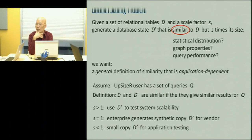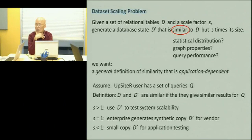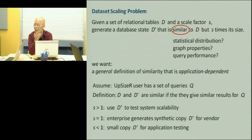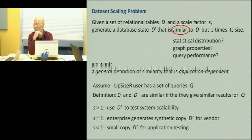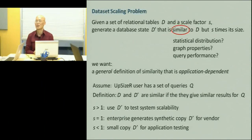After we did this and went around talking to people, we discovered that there's a lot of interest in the other two cases. S equal to 1: if you are a vendor and your customer is a bank, the bank for legal or proprietary reasons would not let you take the data out. So you may want to run Upsizer on the bank's data to make a synthetic copy, which you can then take out of the company. S smaller than 1 is the case I imagine would be relevant to you guys — you may need downsizing. You have a prototype application you want to test and you don't want to test it on the production dataset; you want a smaller copy.